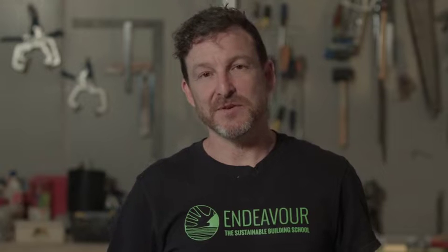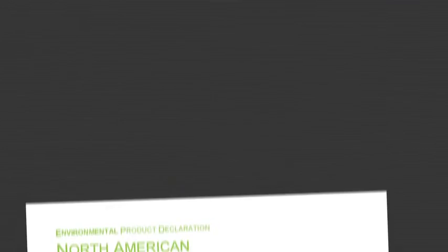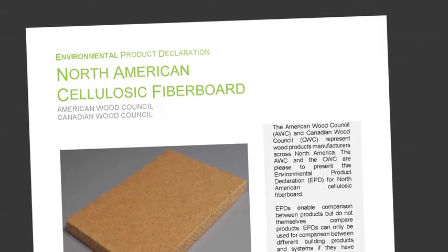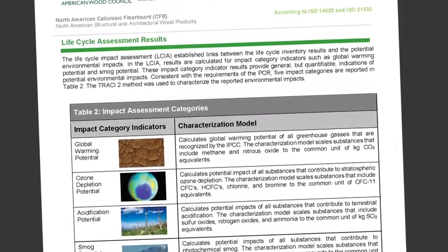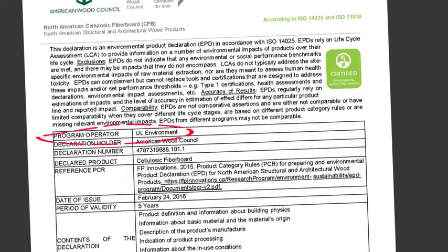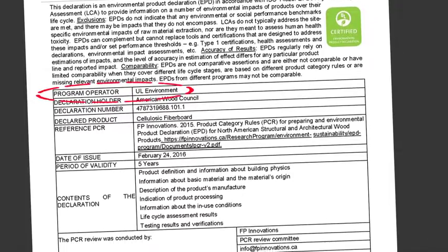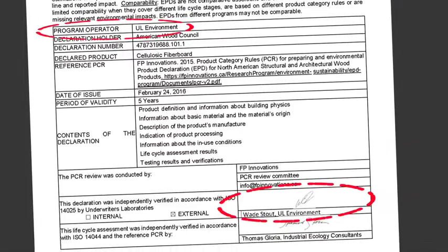For a long time, it's been difficult to access LCAs, and so that's made it hard for somebody to figure out what the carbon footprint of a particular building might be. But now, there's a report called an Environmental Product Declaration, or EPD, in which companies show the life cycle assessments of their products. These EPDs are conducted according to a set of international rules and usually carried out by a third party to verify the information.